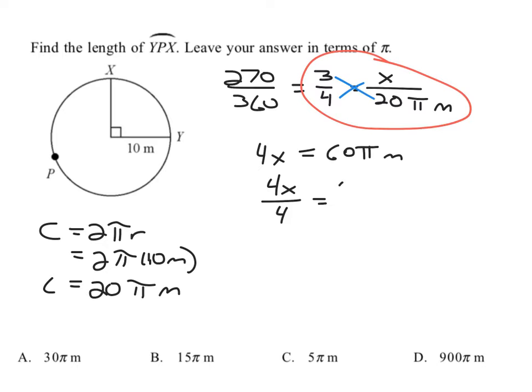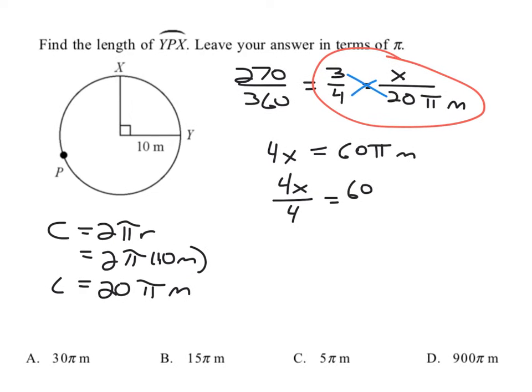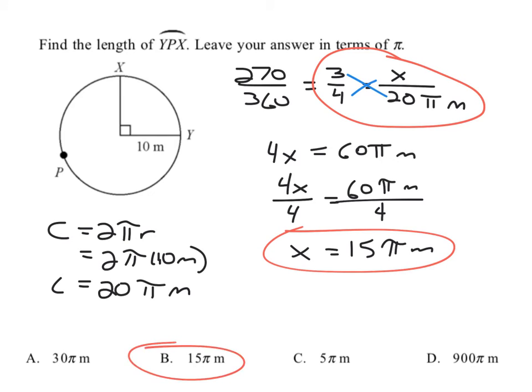And then when we divide both sides by 4 to solve for X, we get X equals 15 pi meters. And if we look on the bottom, that is B.